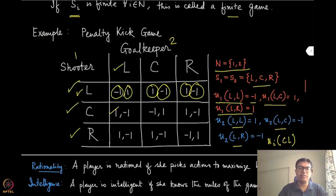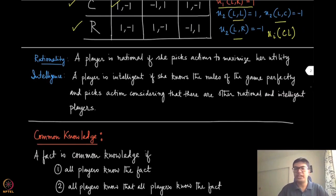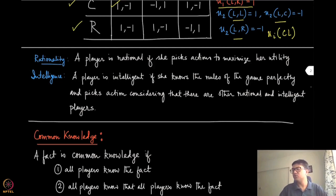So we know exactly how to represent this game in normal form. When we analyze it, we make two assumptions: players are rational and intelligent. Rationality means each agent picks strategies that maximize their utility, as given in this matrix. Intelligence means a player knows the rules of the game perfectly and picks actions considering that the other players are also rational and intelligent. In particular, an intelligent player will think and pick actions like a game theorist.